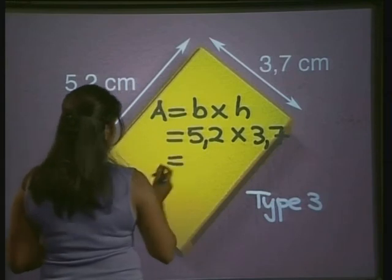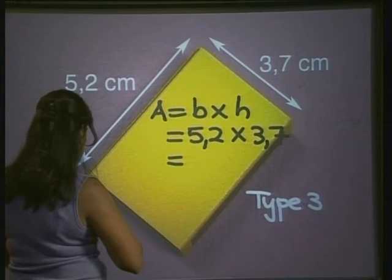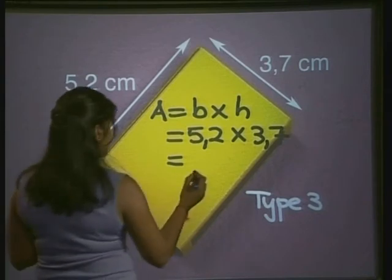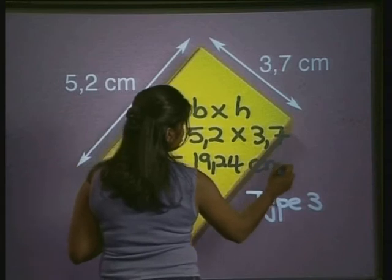Using our calculator this gives us 5.2 multiplied by 3.7: 19.24 centimeters squared.